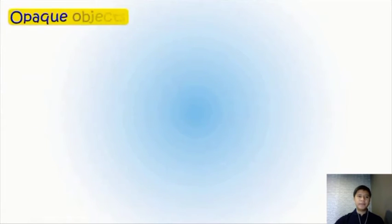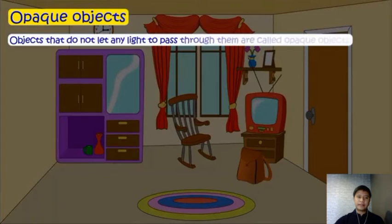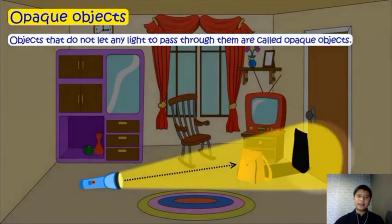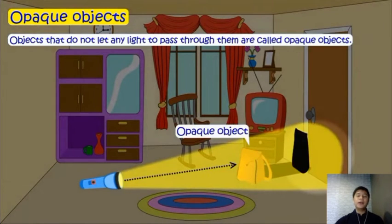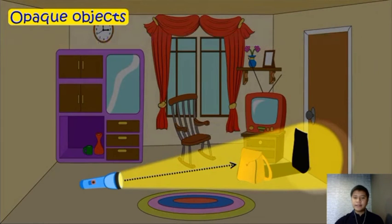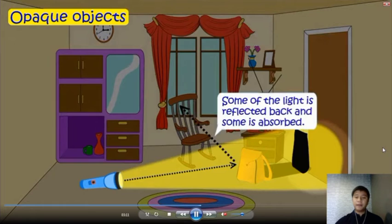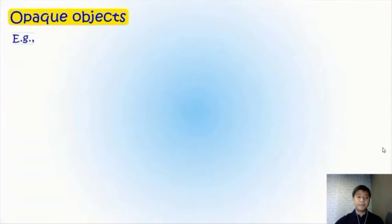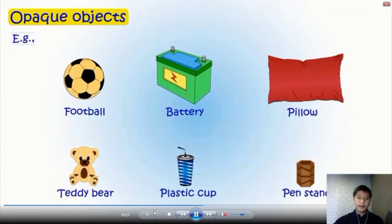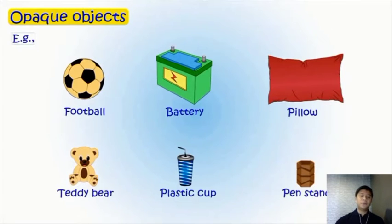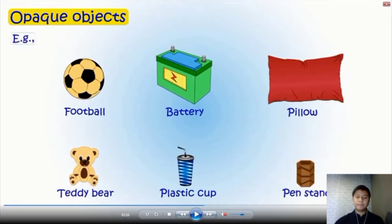Next, we have opaque objects. Objects that do not let any light pass through them are called opaque objects. Example is the bag. Some of the light is reflected back and some is absorbed. Examples: football, battery, pillow, teddy bear, plastic cap, and plant stand.